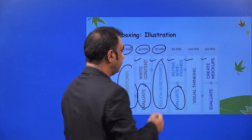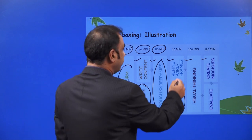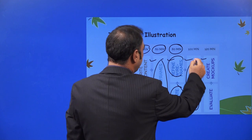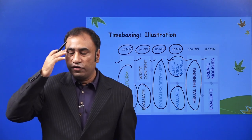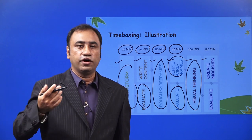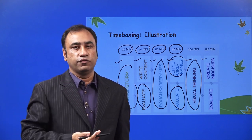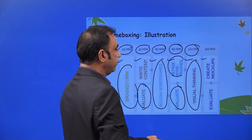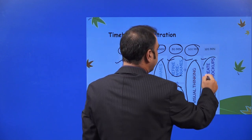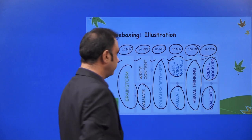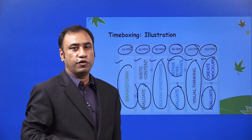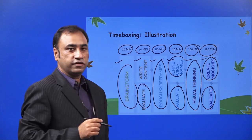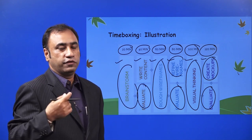Then we evaluate the options and review the wireframes, which takes another 80 minutes. Then visual thinking — visually seeing and thinking how it should look — takes 100 minutes, where we may need to see different wireframe options. Finally, evaluation and creating the final mock-up design takes 120 minutes. This is a classical example of time boxing where we have boxed the time for each task, and as per that we complete those tasks. The same approach you can do for your competitive examination preparation.